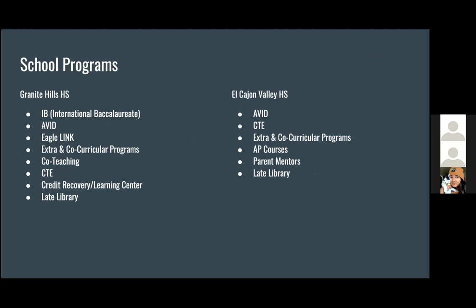My name is Siona and I'm going to take over the slides covering school programs provided at Granite Hills High School compared to El Cajon Valley High School. Looking at Granite Hills' programs, you see a lot more programs provided for higher education, whereas El Cajon does give students advantages through AP courses — college credit and a GPA boost — but compared to Granite Hills, Granite Hills has a lot more that can become a niche for certain career paths or provide a better college application.